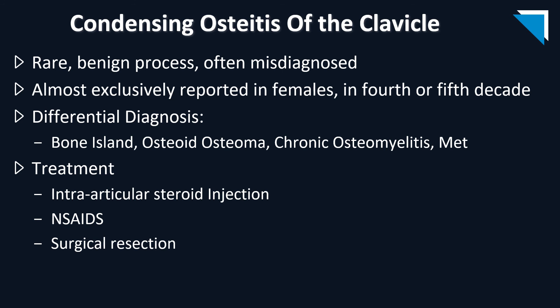Condensing osteitis of the clavicle is a rare benign process that is often misdiagnosed. It is almost exclusively reported in females in the fourth to fifth decade, due to asymmetrical stress on the sternoclavicular joint from carrying an asymmetrical load — such as a child, groceries, or a purse. The differential diagnosis includes a bone island, osteoid osteoma (which would show a joint effusion), chronic osteomyelitis (showing involvement on both sides of the joint with a joint effusion), or metastasis.